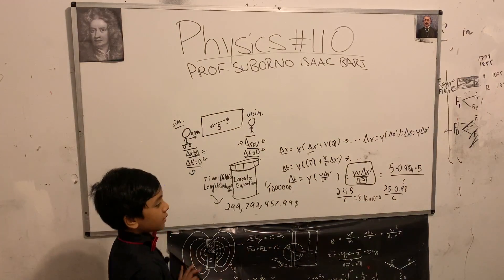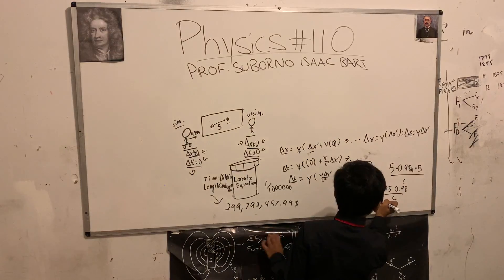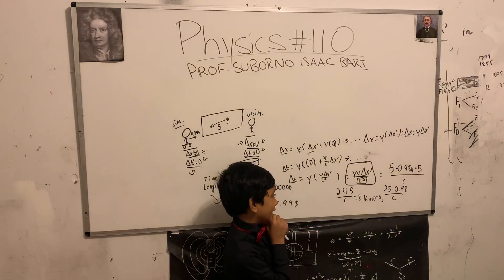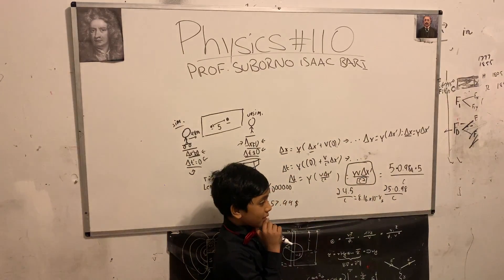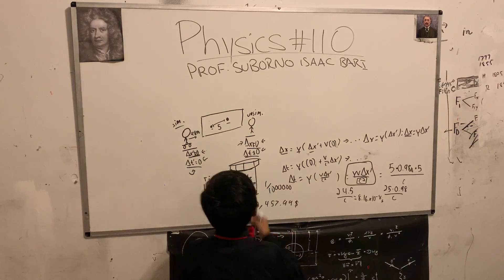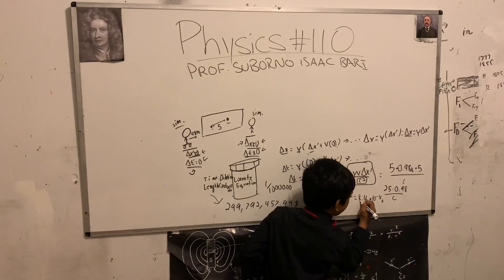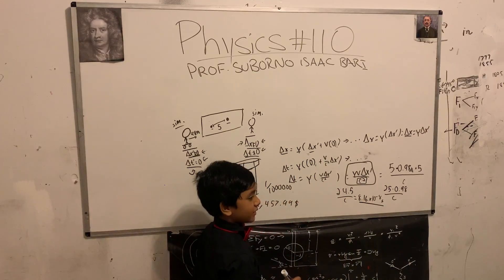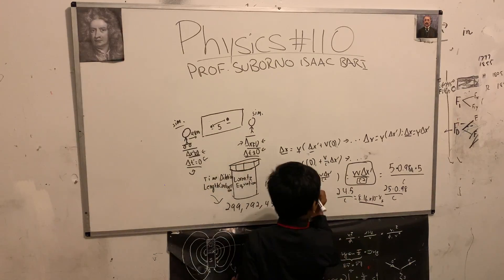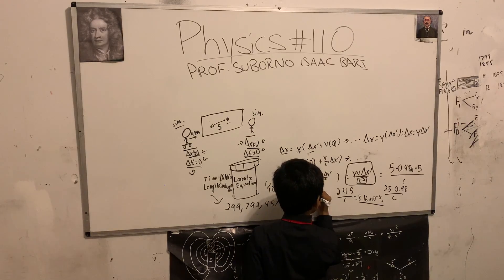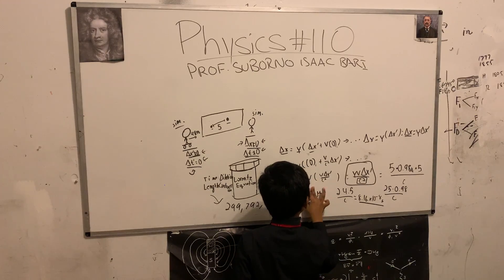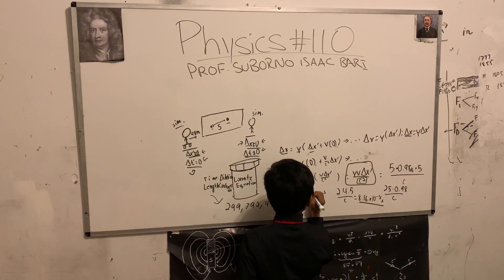For the observer at rest, when for the observer moving it's simultaneous. Now that's probably going to be a pretty short interval. He probably would also say it's simultaneous considering he probably wouldn't notice 8.16 times 10 to the negative 8 seconds, or 8 hundredths of a microsecond. Yeah, he probably would not catch that, just saying.